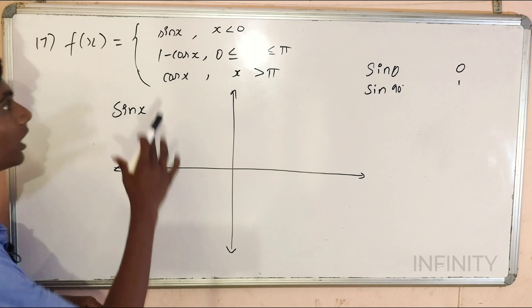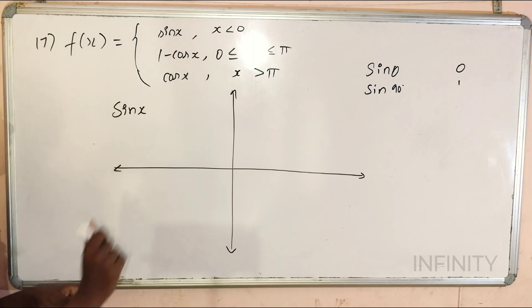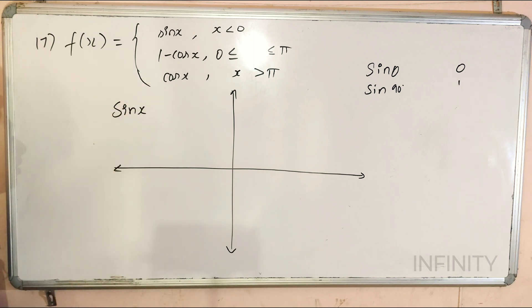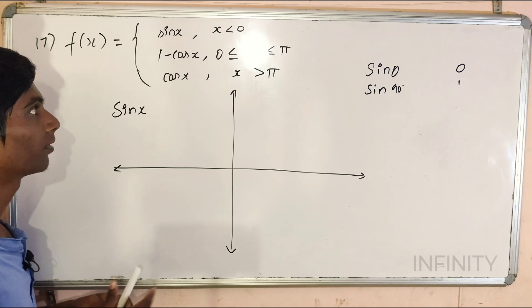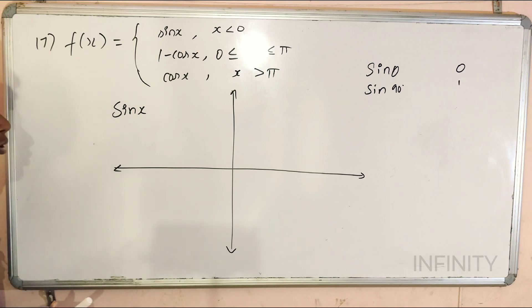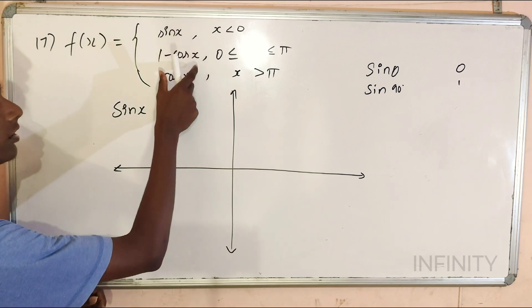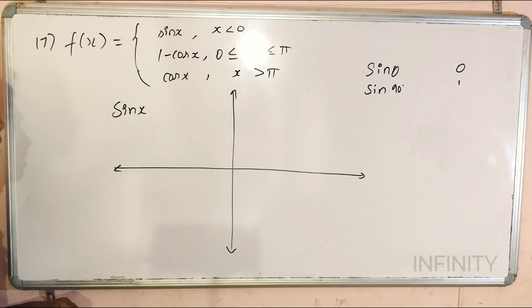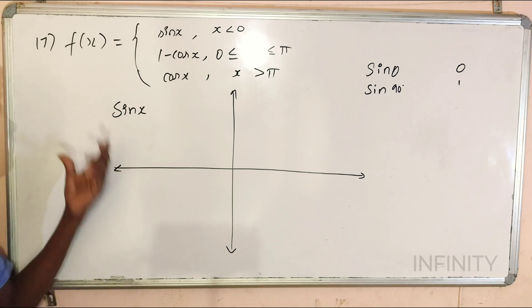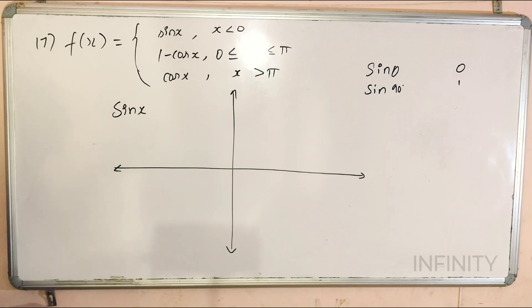So, what are we going to talk about? We have a function. This function is everywhere limit. So, we can solve that. First of all, we have a function. That is why we have a graph.